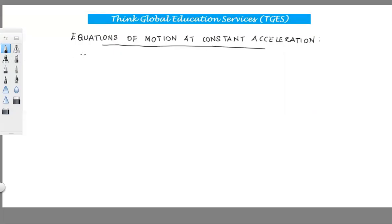Welcome to Think Global Education Services. Today's topic is equations of motion at constant acceleration. We now examine motion in a straight line when the magnitude of the acceleration is constant. In this case, instantaneous and average accelerations are equal.